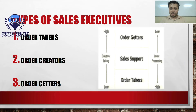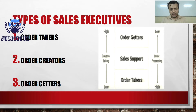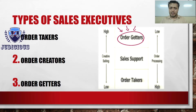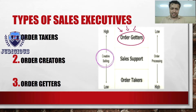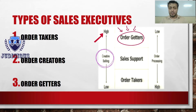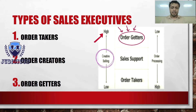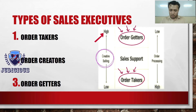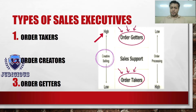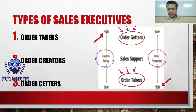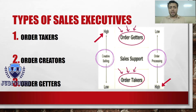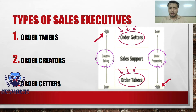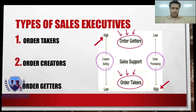If you look at this graph, this diagram on your screen, on the left hand side there is creative selling skill and on the right hand side we have order processing. In the case of order getters, their creative selling is very high — these are the people who actually go and sell the product. Whereas in the case of order takers, order processing is very high, meaning they don't do direct creative selling but they help in processing the orders received.